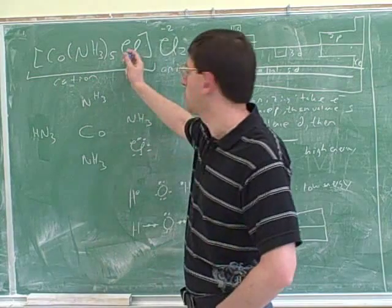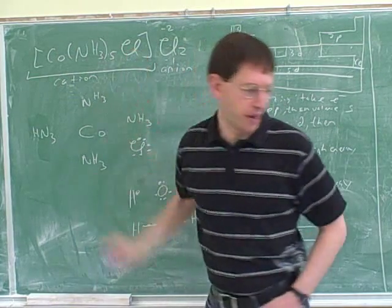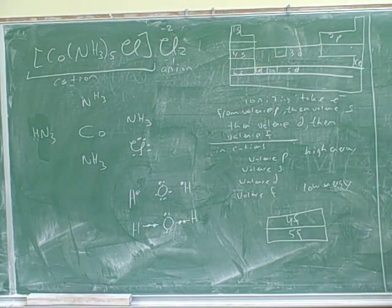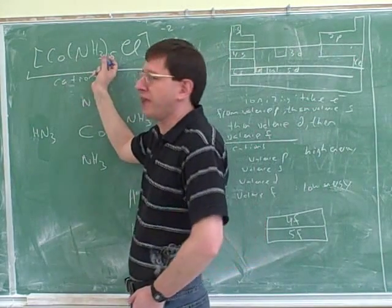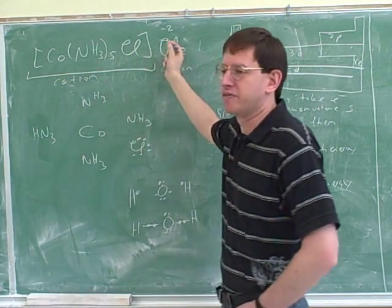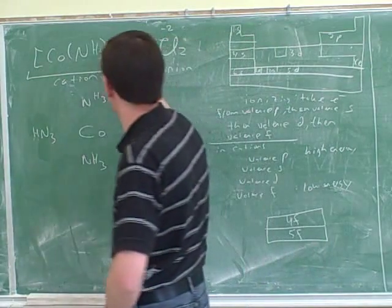So we know that there's one chlorine in this complex. So this is what's called the complex ion, because it's an ion and it's complex, whereas the chloride over here is a simple ion. So here we have a complex ion.